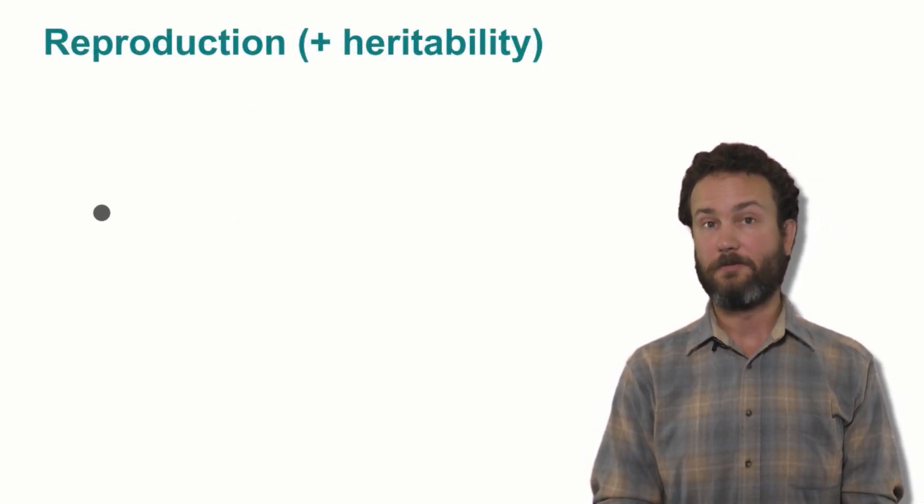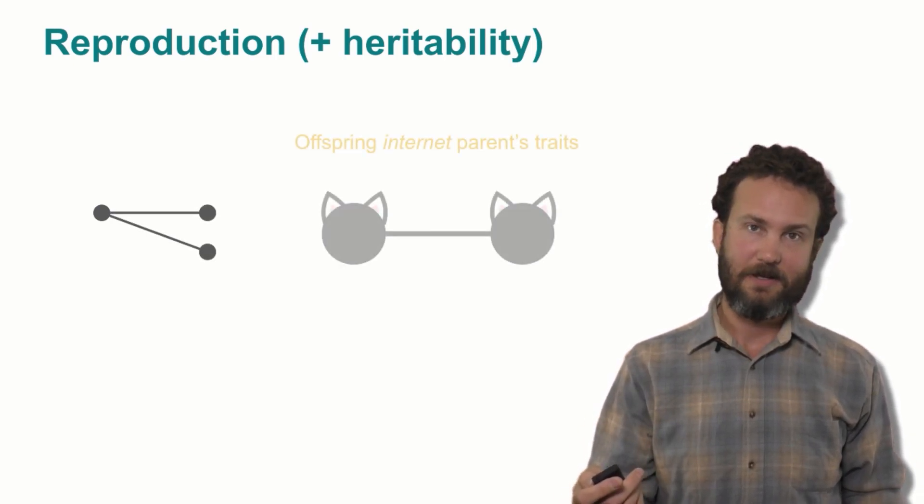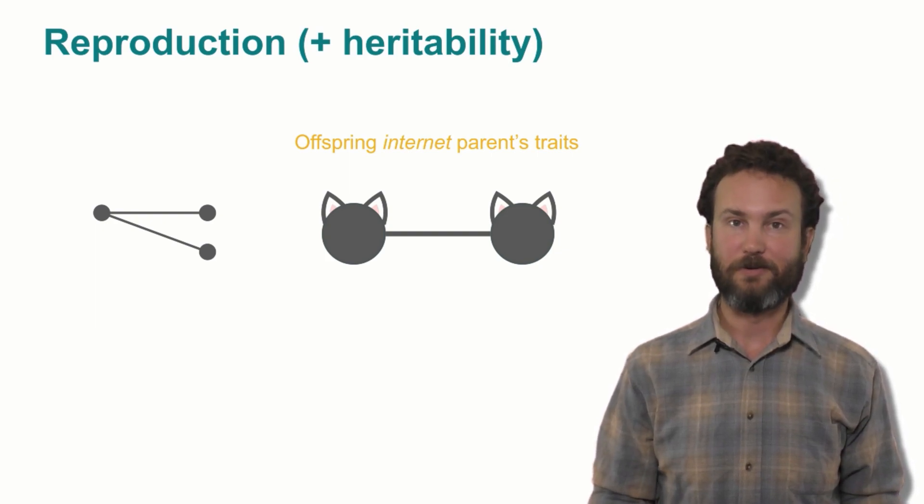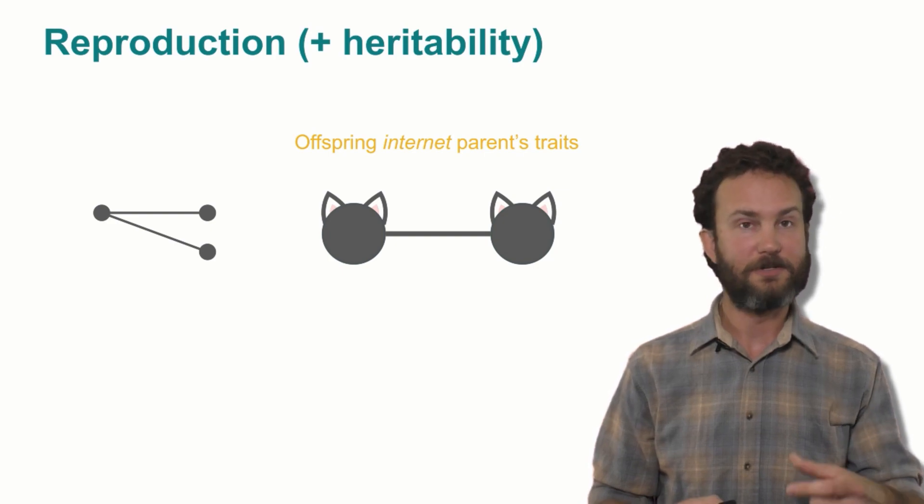Reproduction is a fairly straightforward idea. It's the idea that a parent can give rise to offspring. Inheritability is inherent in biological reproduction, because this happens by the copying and transference of DNA, which is the molecule of information and heritability in biology.